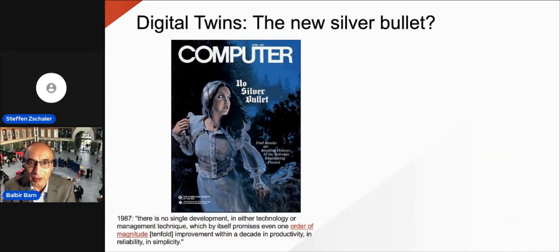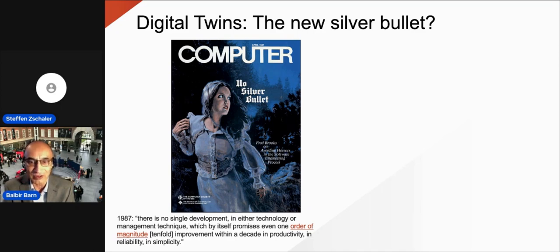I remember this paper in IEEE Software from Fred Brooks in 1987 — it was a seminal paper. I was just completing my PhD and had gone off to work for GEC Software, working on one of those very early project support environments — they would later be called CASE tools. I would see the word 'silver bullet' associated with those CASE tools as the answer to all our problems in software engineering. And today, it would seem that digital twins are the new silver bullet.